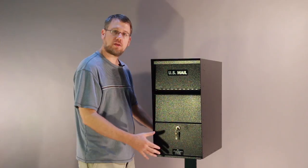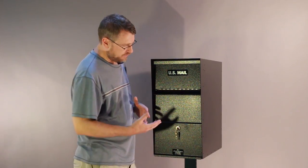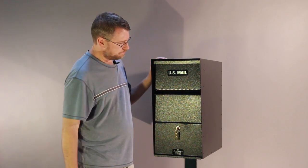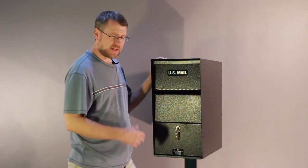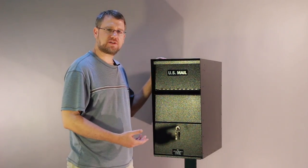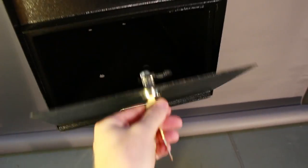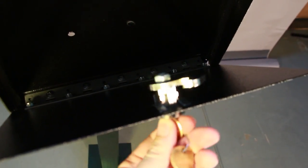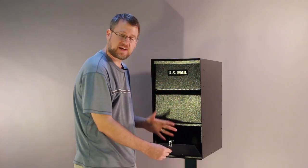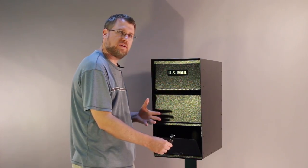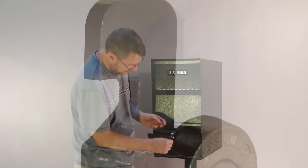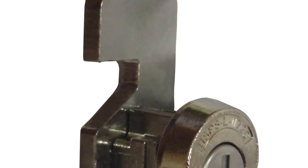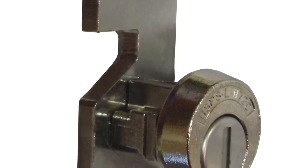Another feature that makes this mailbox different is that there's a number of lock options. This is a standard five-pin lock, and it's really a stout lock. If you're in a regular neighborhood and don't anticipate any problems, it's reinforced steel, you're really not going to have any issues with this.